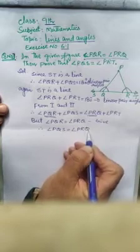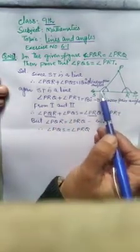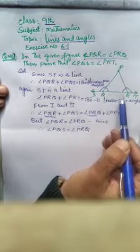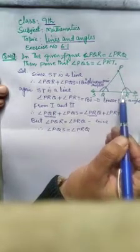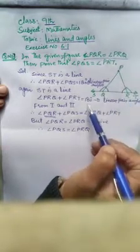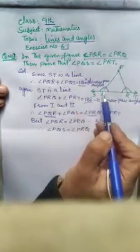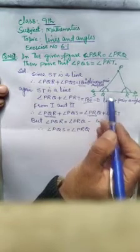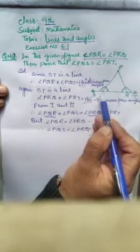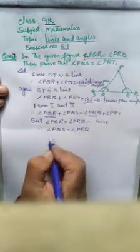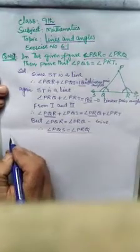So question number 3 is very easy - the angles sum to 180 degrees using linear pairs. Now we move to question number 4.